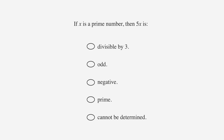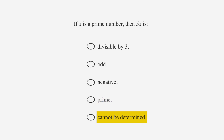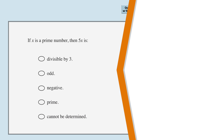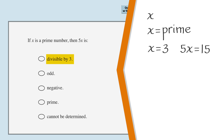If x is a prime number, then 5x is: divisible by 3, odd, negative, prime, or cannot be determined? Let's test the first answer choice by picking some numbers for x. Remember, whatever number we choose for x must be prime. Let's go with 3. Then 5x equals 15, which divides evenly by 3. So this option sometimes works, but that doesn't mean it's true for all prime numbers. What happens if we let x equal 2?